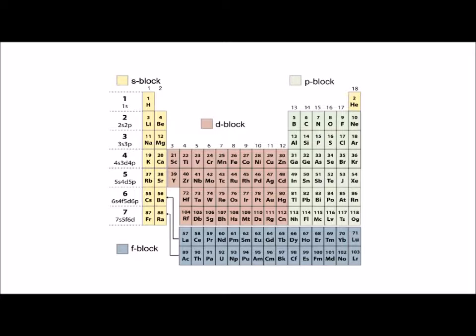The P block is the last six columns on the right-hand side, starting at boron. The D block is the transition metals in the middle of the periodic table, and the F block is the lanthanide and actinide series.